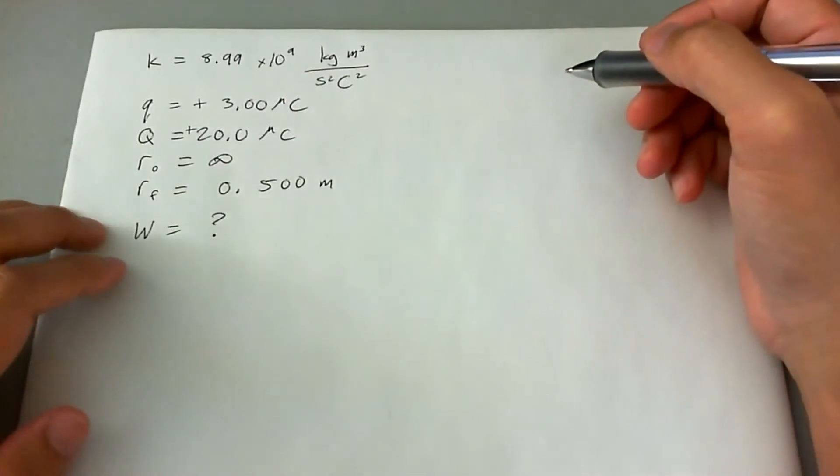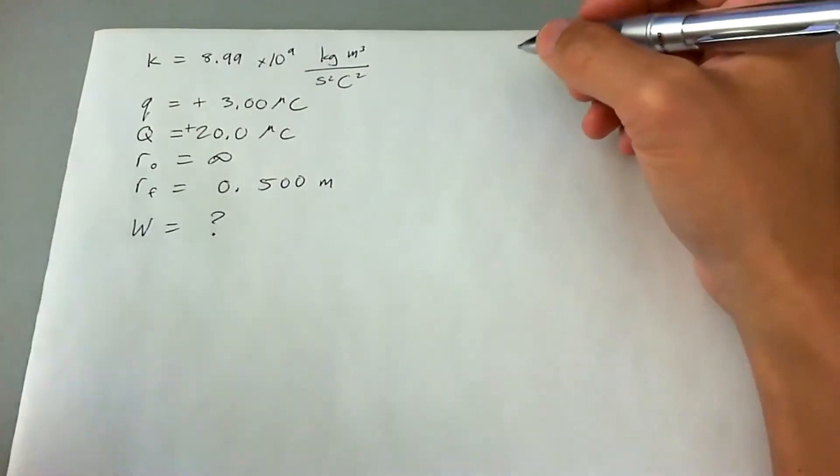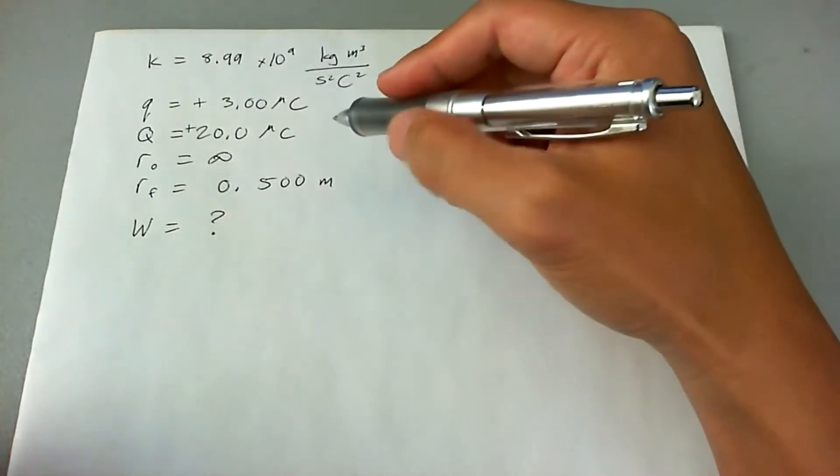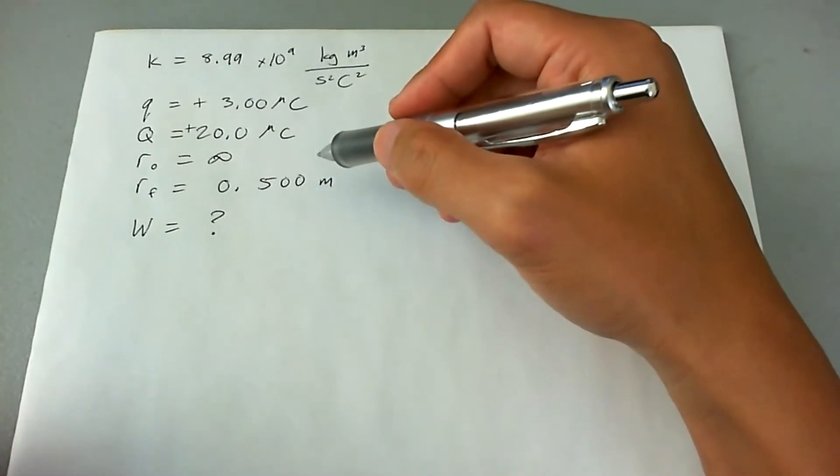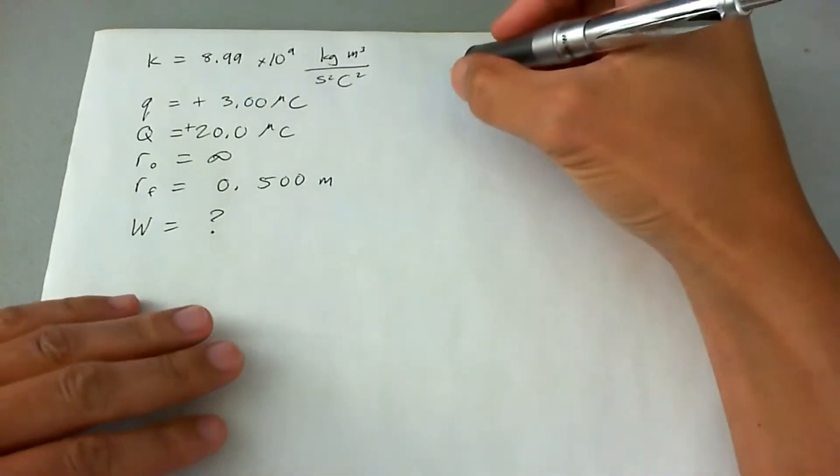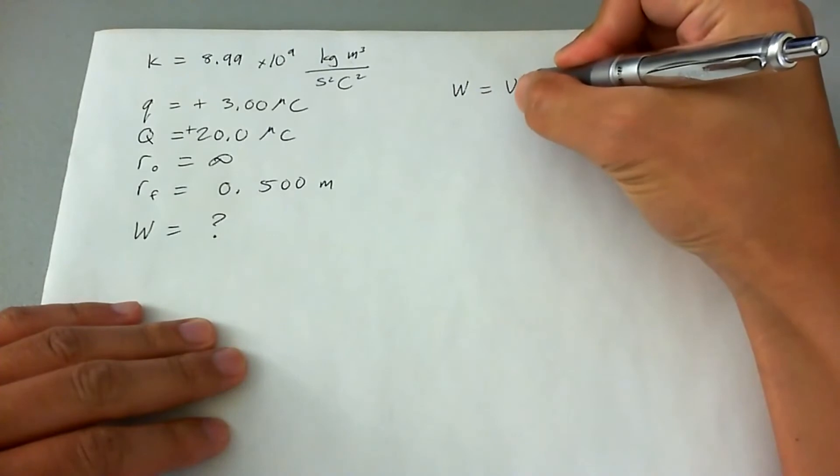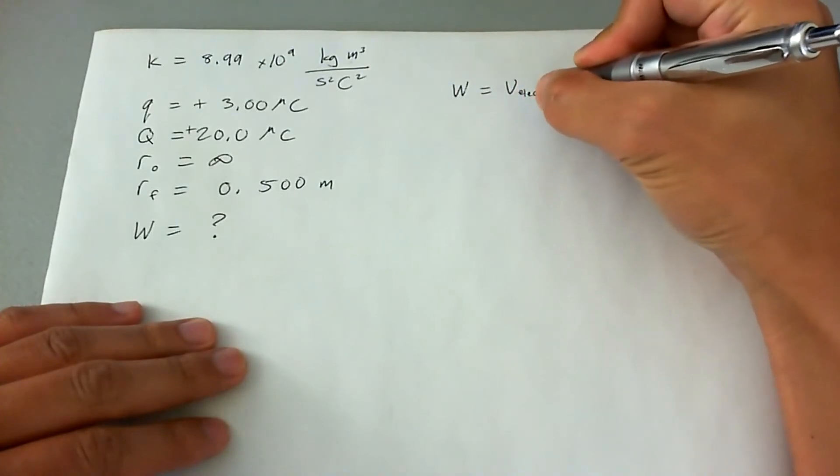So the work equation that we have, there's a few things. Work is force times distance, but the one that might serve us a bit better since we don't have a direct relationship of force, we can use work equaling the change in electric potential energy.